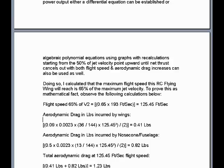Aerodynamic drag in pounds incurred by the wings would be equal to a flat airfoil drag coefficient of 0.09, multiplied times an air density of 0.0023 slugs per cubic foot, times the ratio of 36 square inches divided by 144 — the number of square inches to one square foot — multiplied times 125.45 feet per second flight speed quantity squared. This entire calculation divided by 2 equals 0.41 pounds drag incurred by the wings when at a flight speed of 125.45 feet per second.